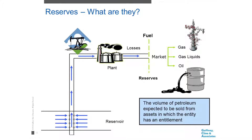Here is another way of looking at it, perhaps a little more simply: the volume of petroleum expected to be sold from assets in which the entity has an interest. So what we're talking about is what our reserves are — what we expect to produce and sell to the market. When an oil and gas company comes out with a reserves report, really what it's saying is this is what I have available to sell. They calculate it doing an enormous amount of work in terms of what they can get out of the reservoir.